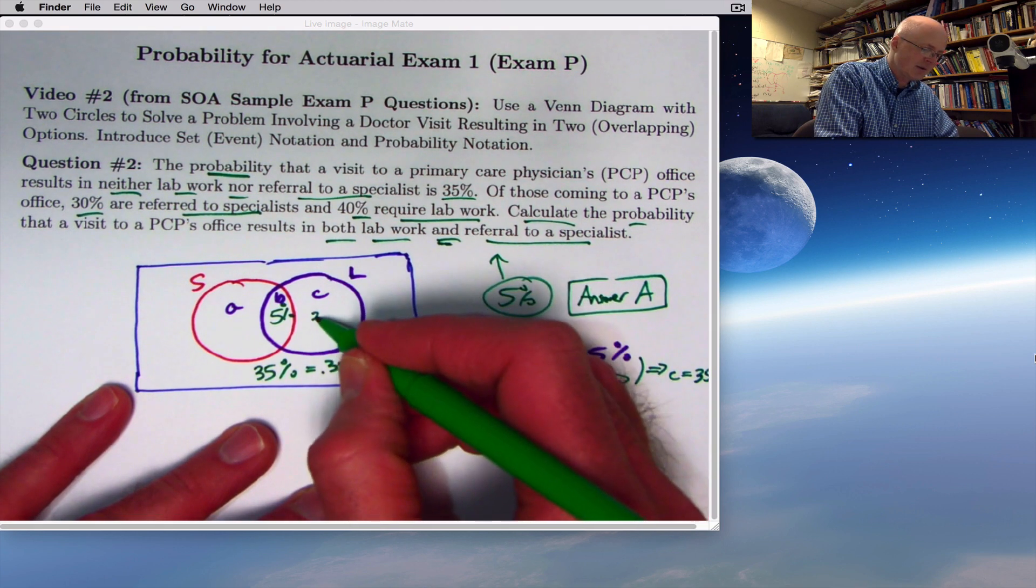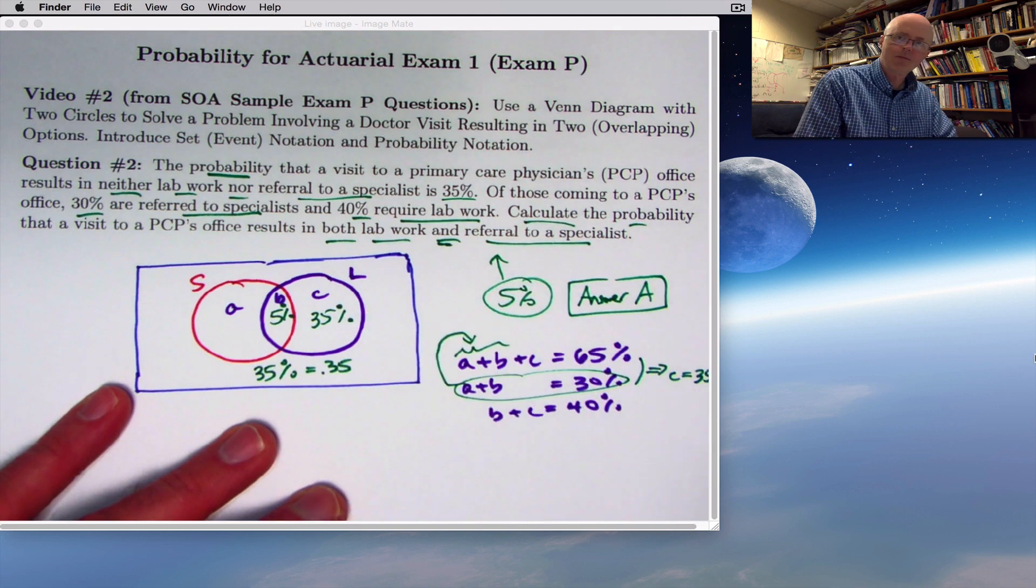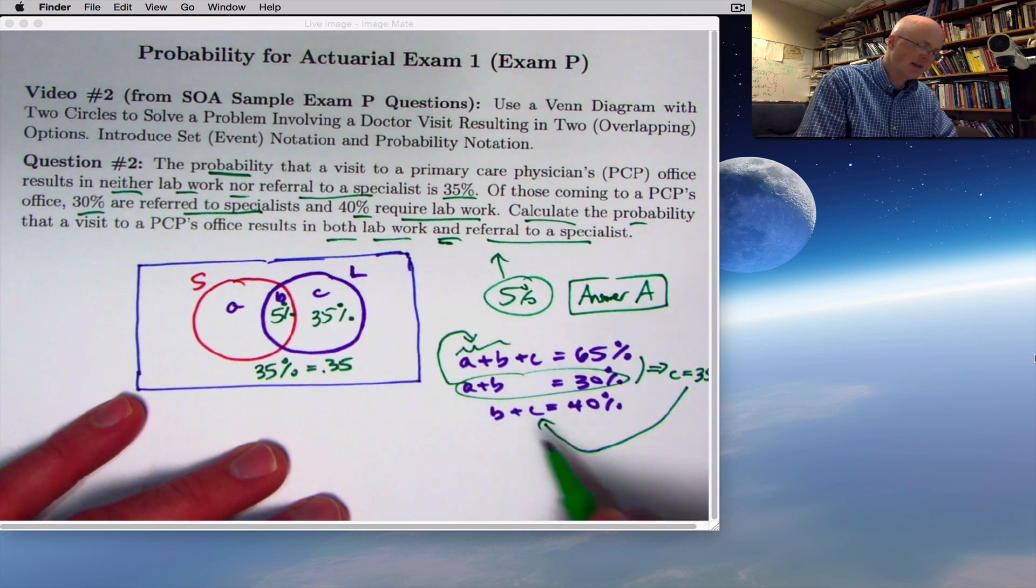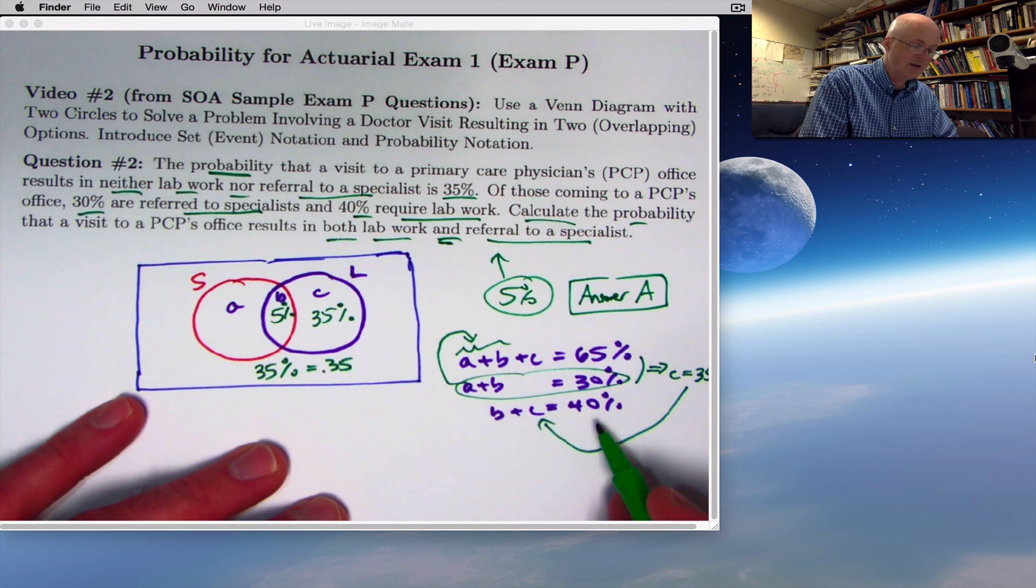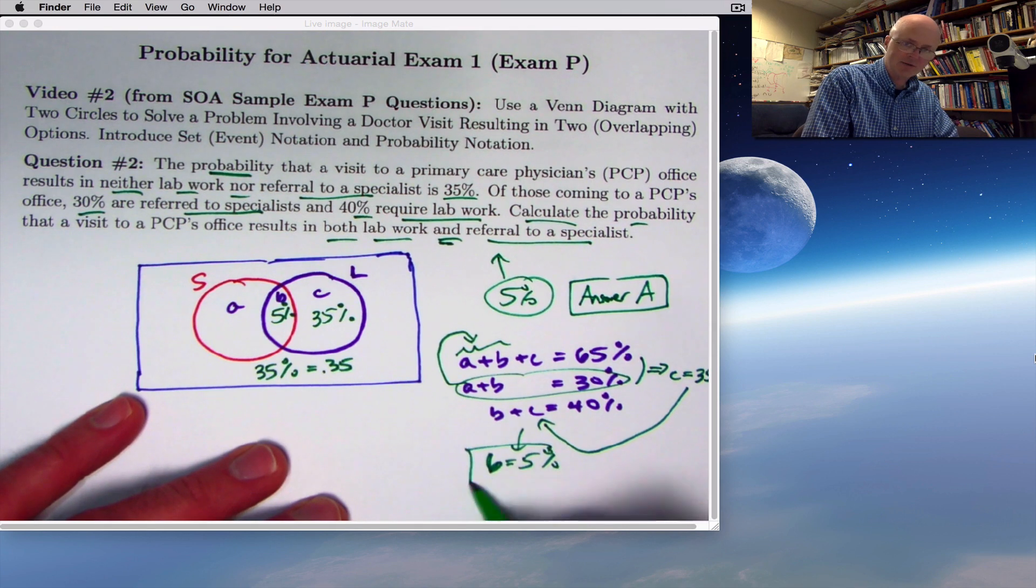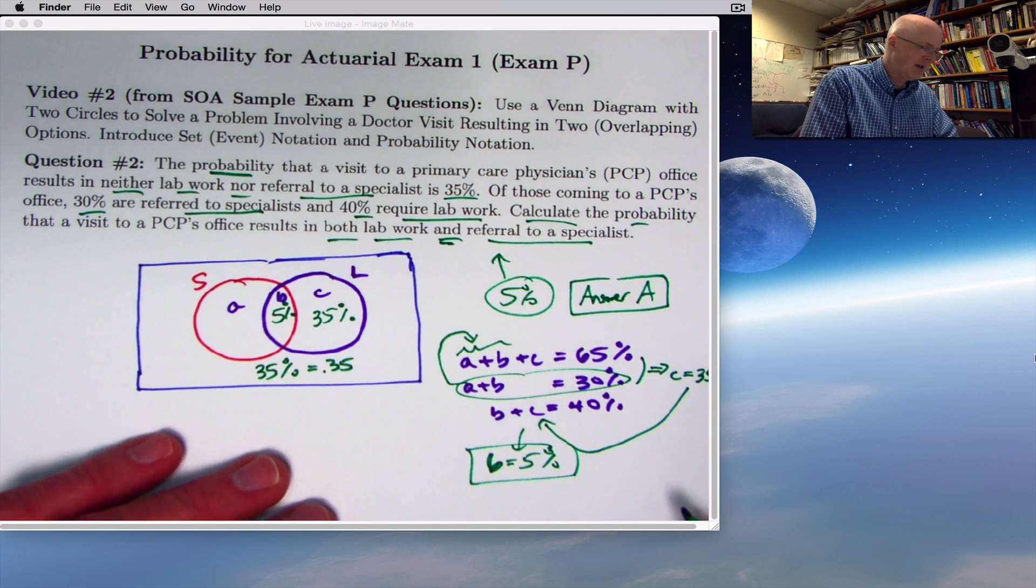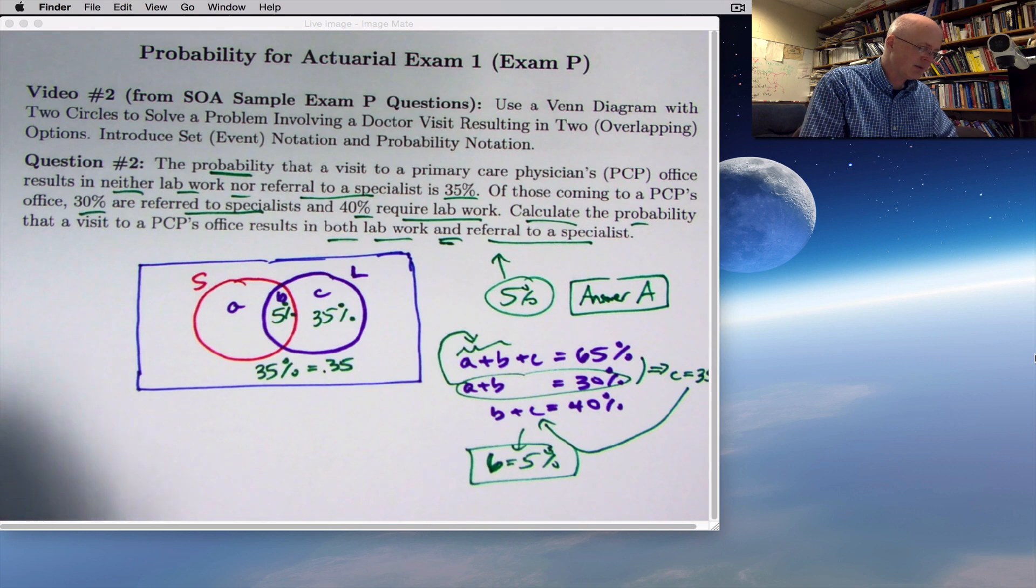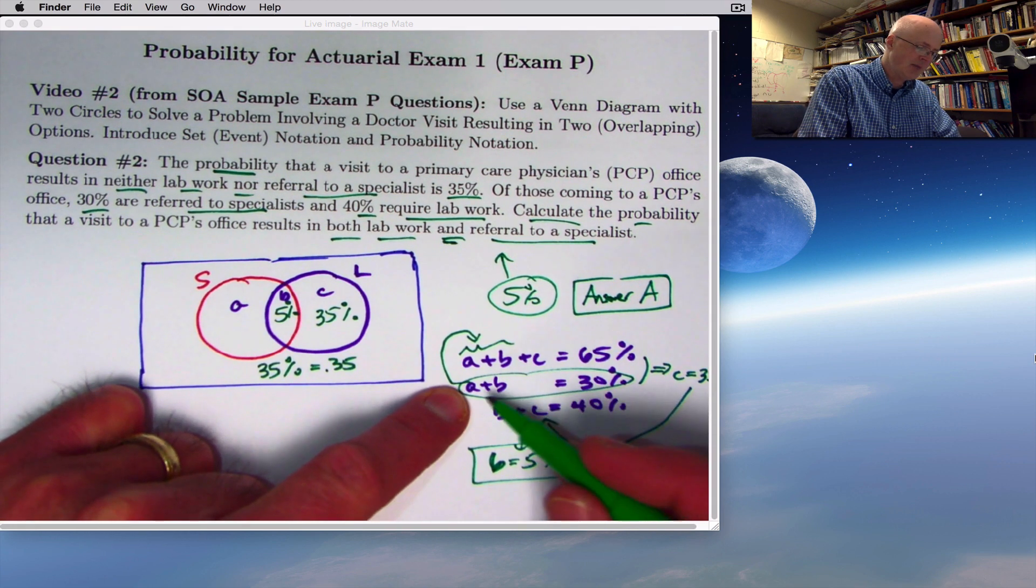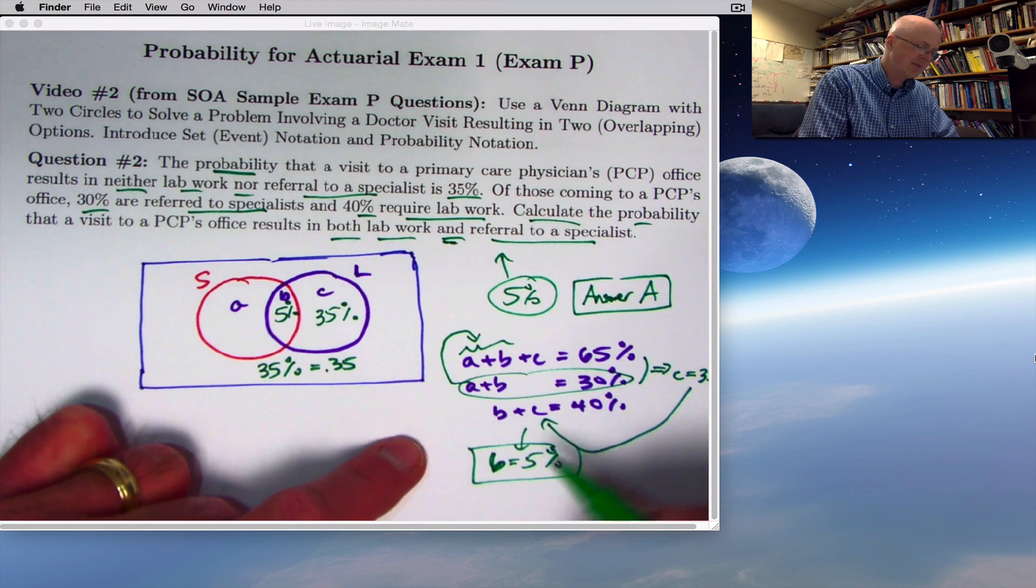You could label this with 35%. Then you could use that fact to say that B plus 35 must be 40. Therefore, B must be 5%, like we already knew was the answer. That is the answer to the question.